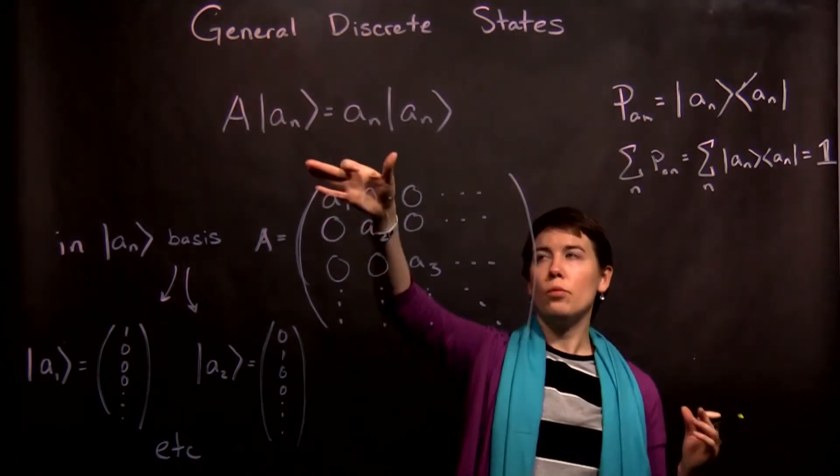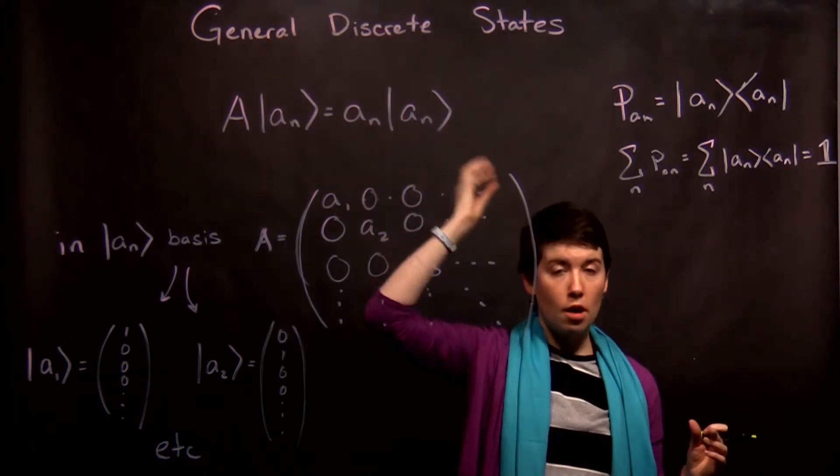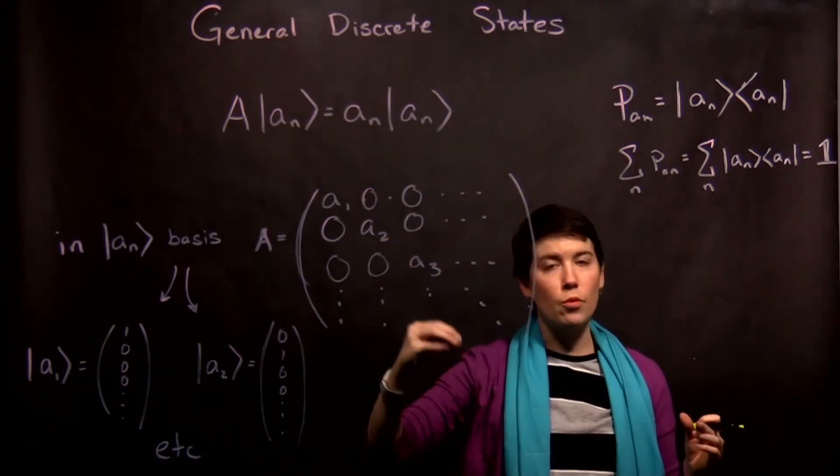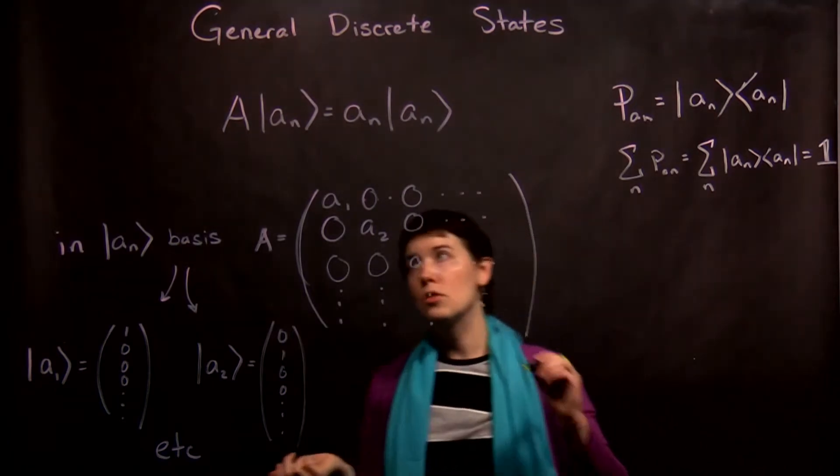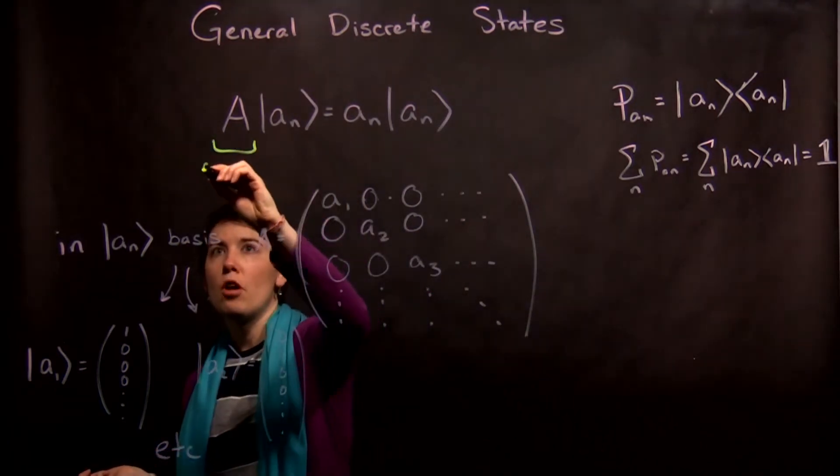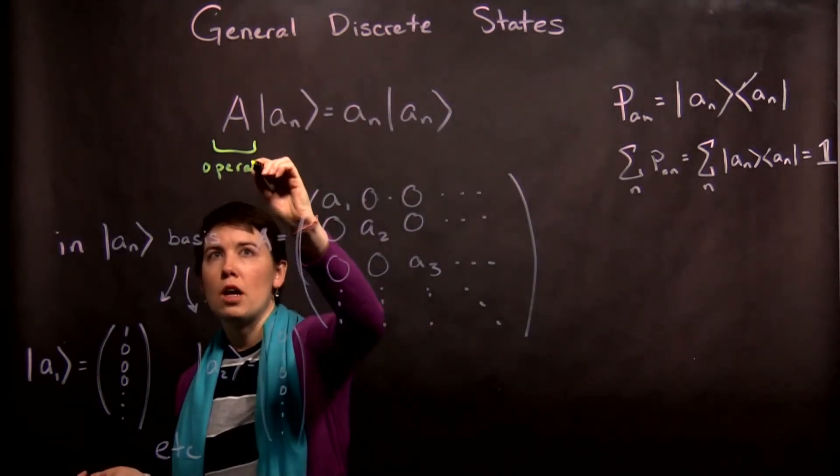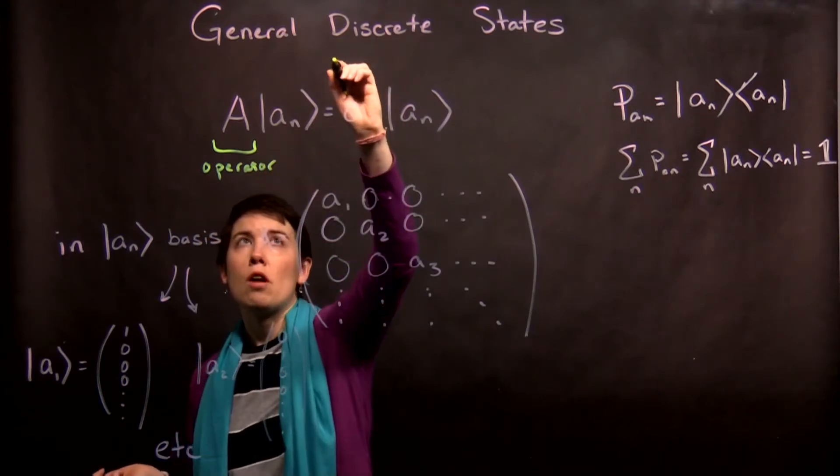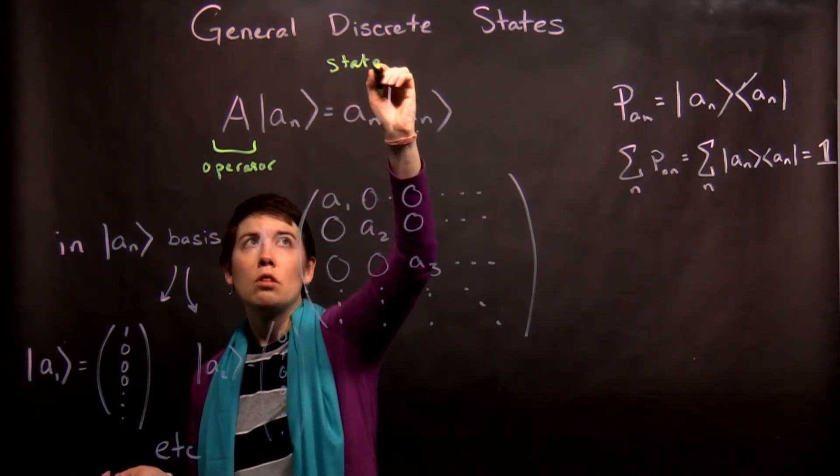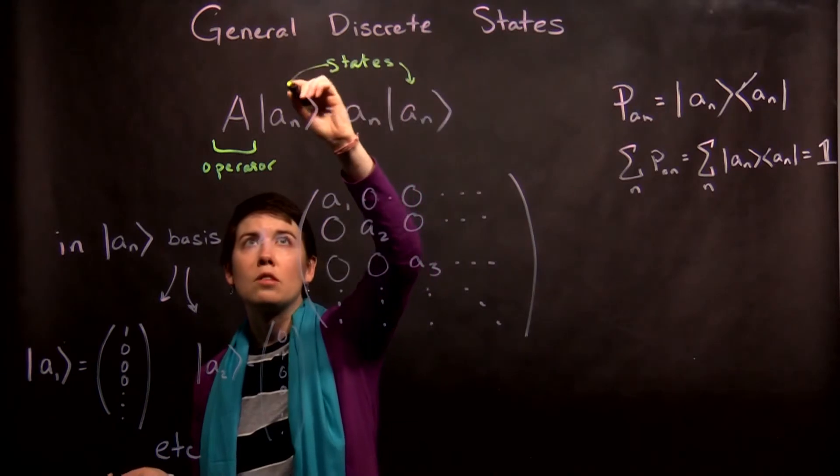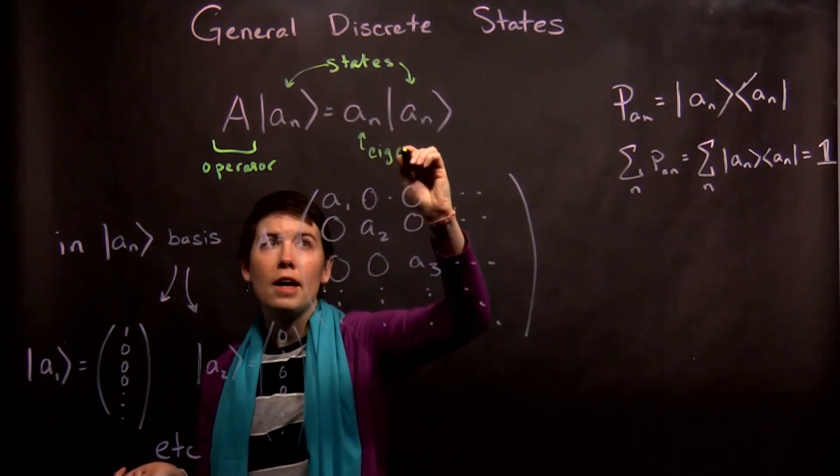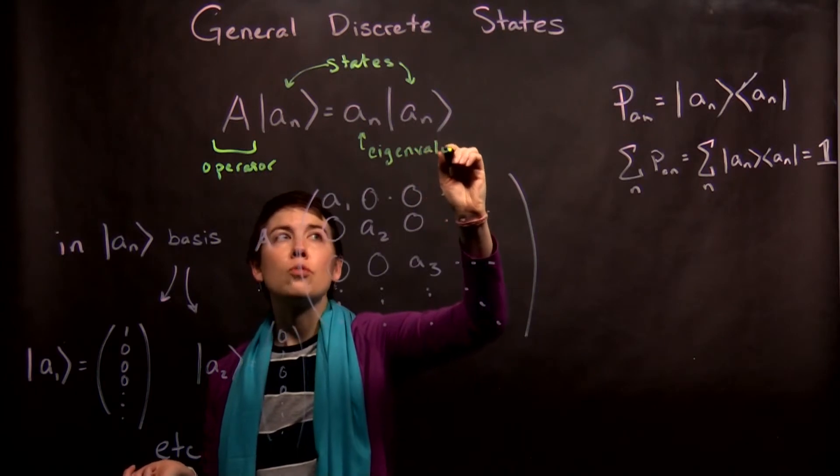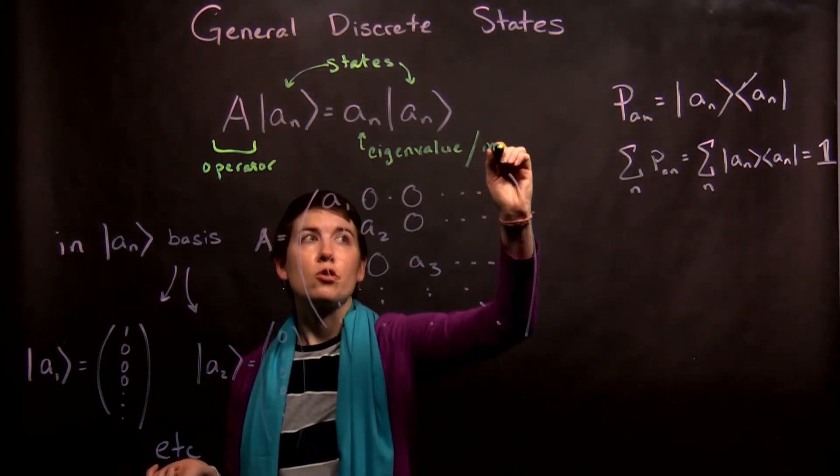So the first thing is that when we're thinking about our basis and our operators and our states, we're thinking about eigenvalues and eigenvectors. So remember that this is going to be your operator. The operator is key. These are states. And again, here it's written in the ket state.